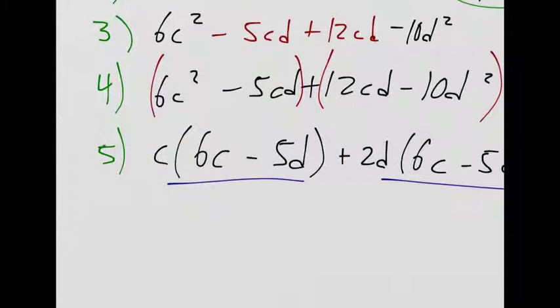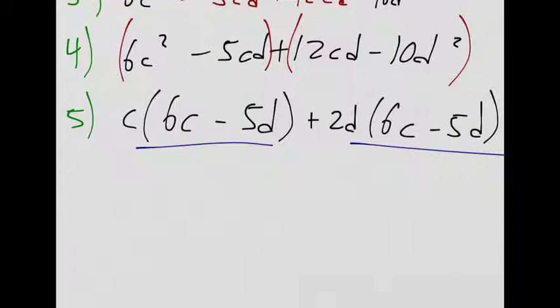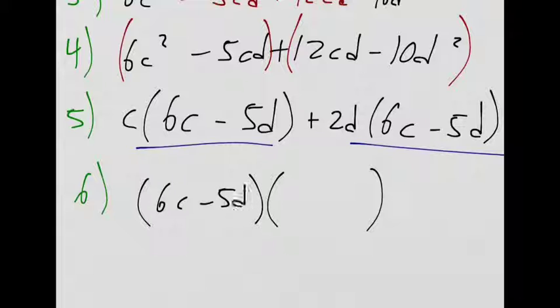Do you feel like you're getting some stability on your bike now? Yeah. Good. 6, my last two factors. What do I have? 6c minus 5d. That's one of them. And the other guy? C plus 2d. C plus 2d. And I'll leave it to you to multiply to check.